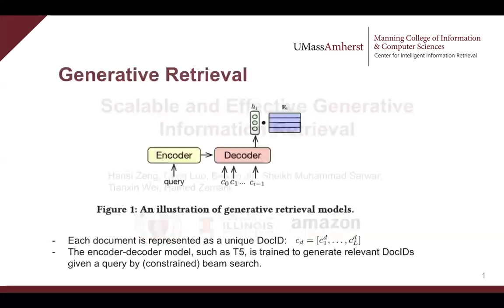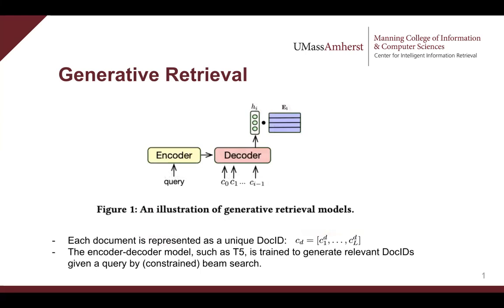First of all, I want to introduce what is generative retrieval. Generative retrieval is a new paradigm of document retrieval. It represents each document as a unique document identifier, termed a document ID, and casts the retrieval task as a sequential generation task. The encoder-decoder model, such as T5, is trained to generate retrievable IDs using constrained beam search.